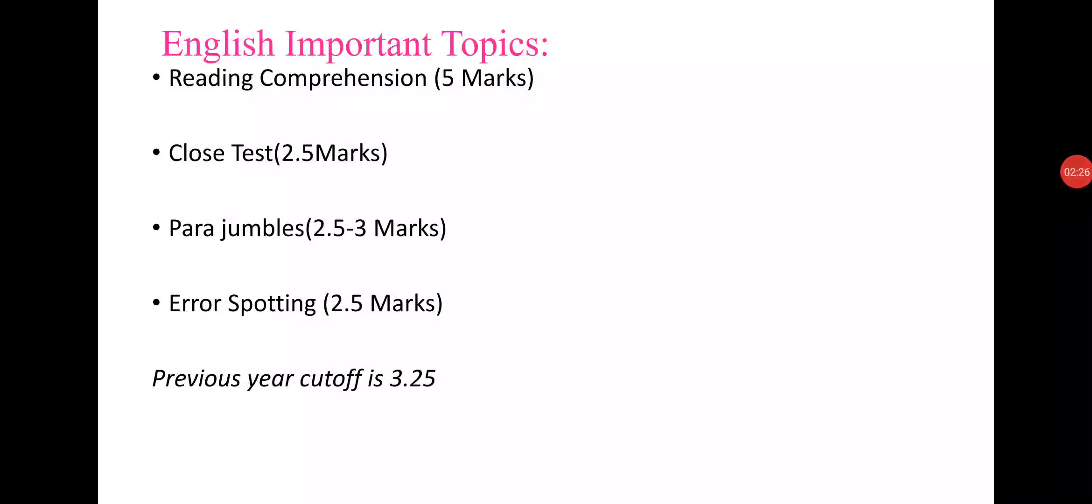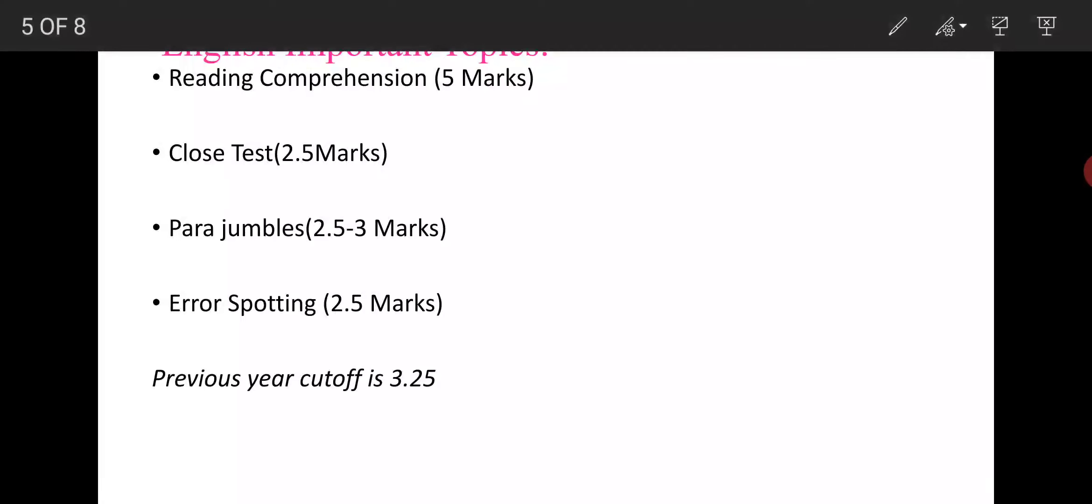Now discussing English important topics: Reading Comprehension is 5 marks, Cloze Test is 2.5 marks, Para Jumble is 2.5 to 3 marks, Error Spotting is 2.5 marks. Previous year cutoff is 3 to 3.25 marks.